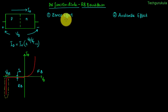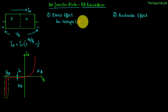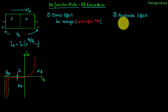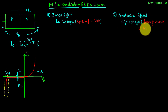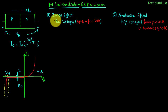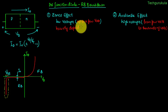If breakdown happens because of the Zener effect, we call it Zener breakdown. It happens at low voltages, usually up to a few volts. If the breakdown happens because of the avalanche effect, we call it avalanche breakdown, and it usually occurs at high voltages, starting from a few volts to thousands of volts. Let us start with Zener effect. Zener breakdown happens in P-N junctions which are heavily doped.